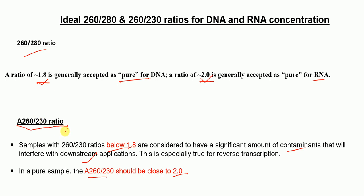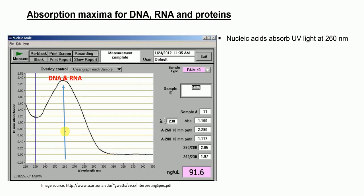What are the absorption maxima for DNA, RNA, and proteins? For nucleic acids — DNA and RNA — they absorb UV light with an absorption maxima at 260 nanometers. If you look at the wavelength axis, 260 nanometers is the peak for both DNA and RNA.